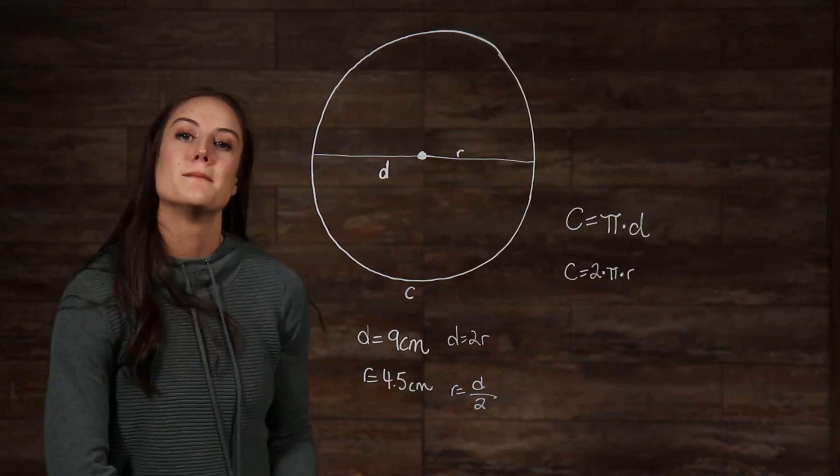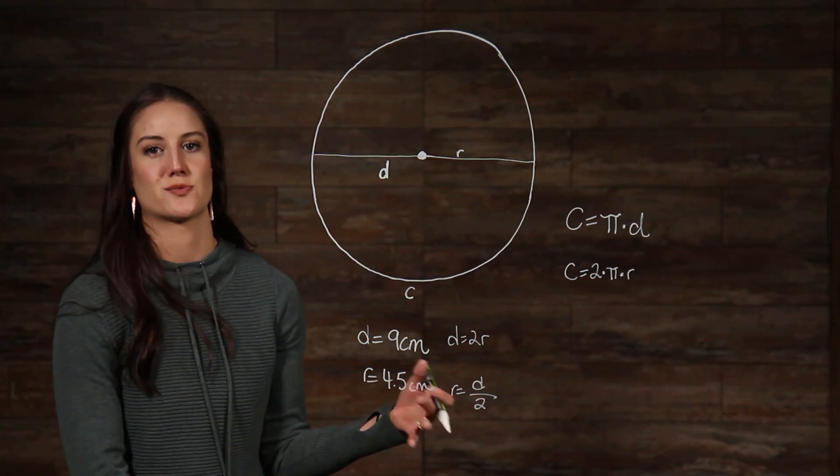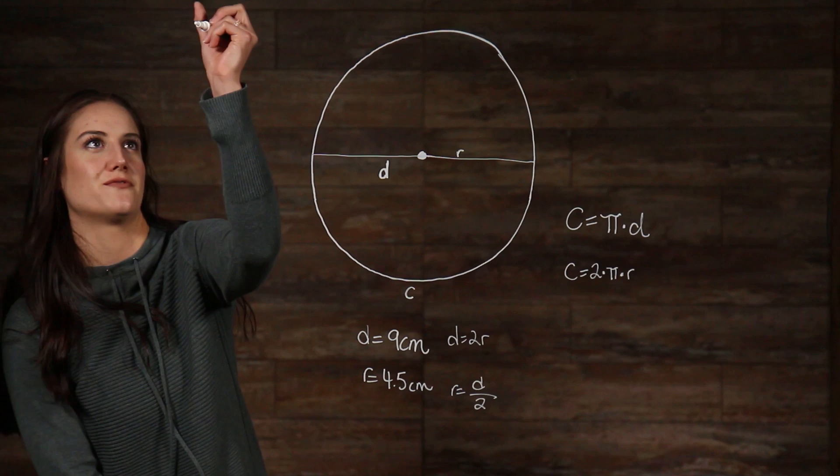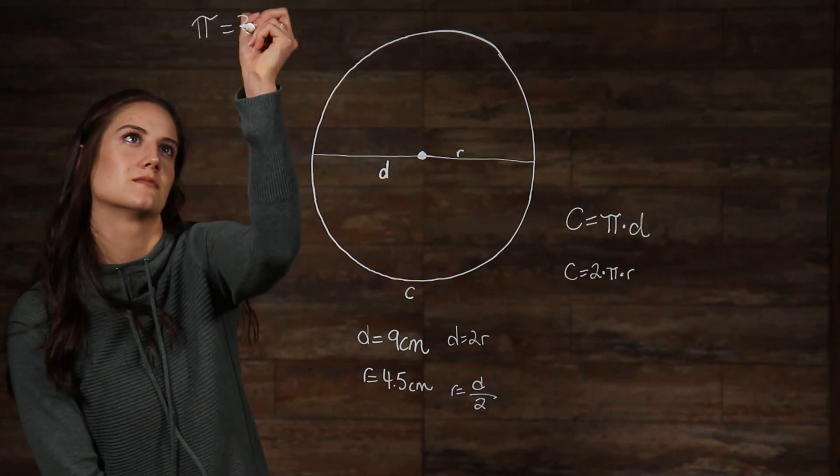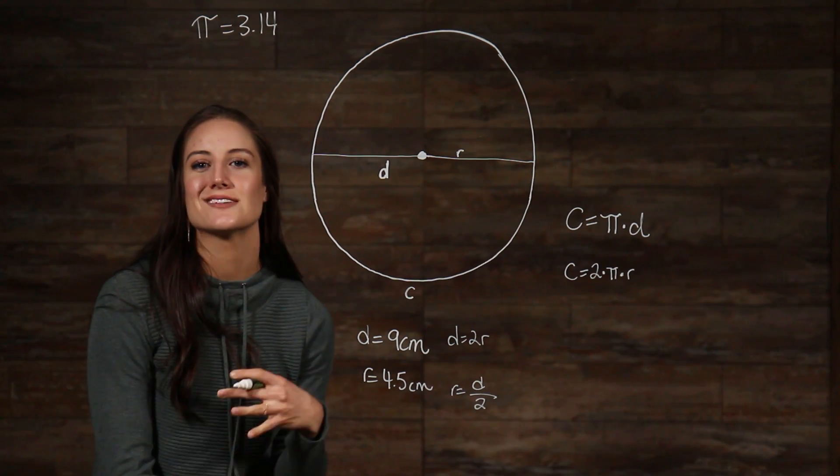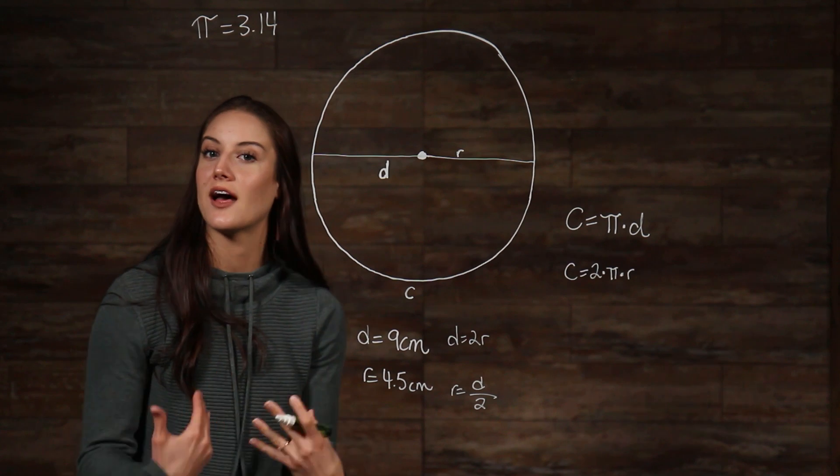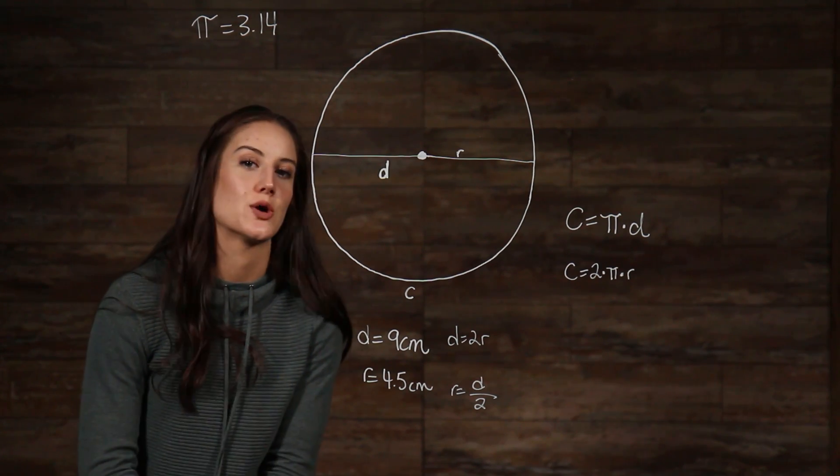Pi is a symbol we use in mathematics to represent the number 3.14. And actually, that is just pi rounded to the nearest hundredth. Pi actually has no end and no predictable pattern. It just keeps going.